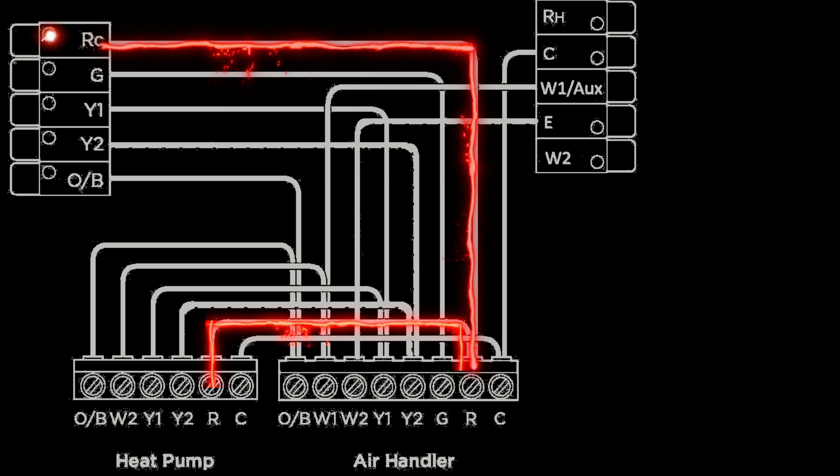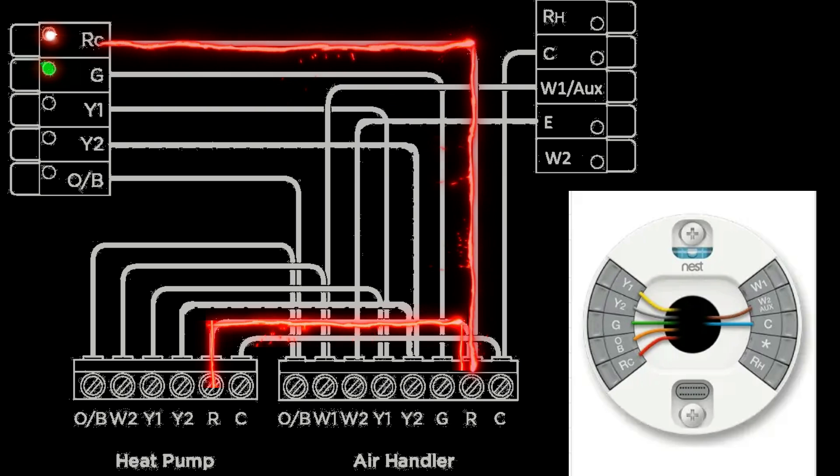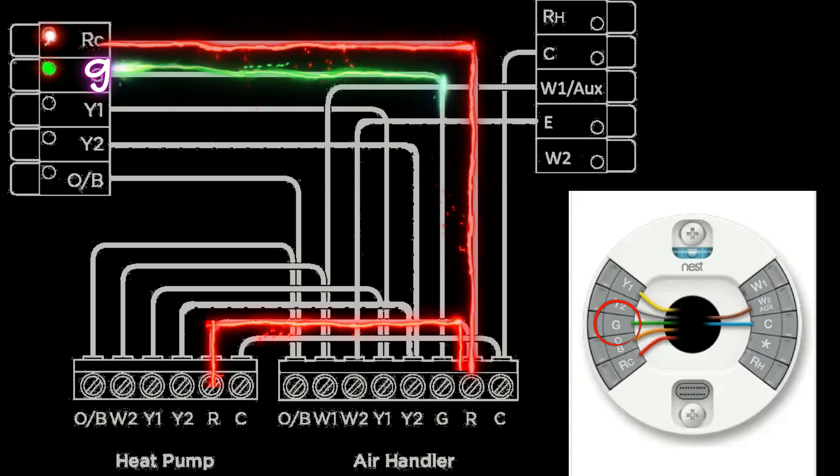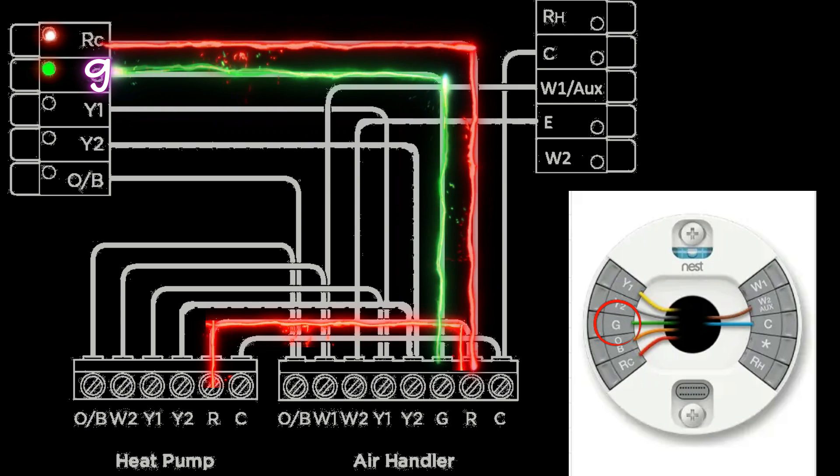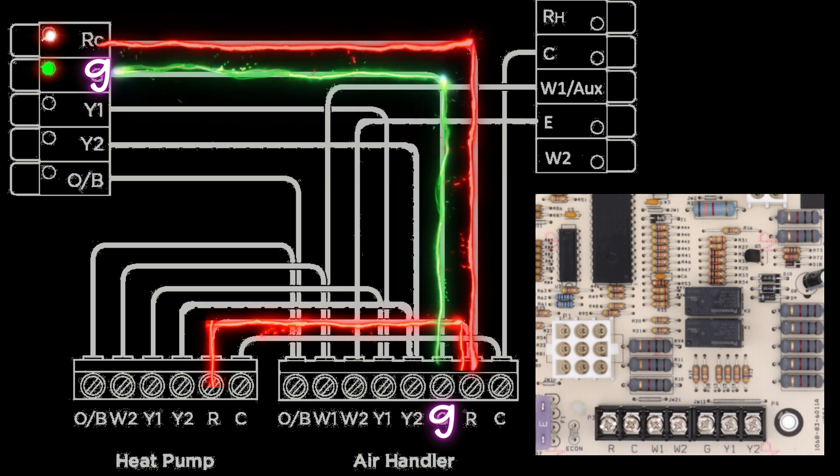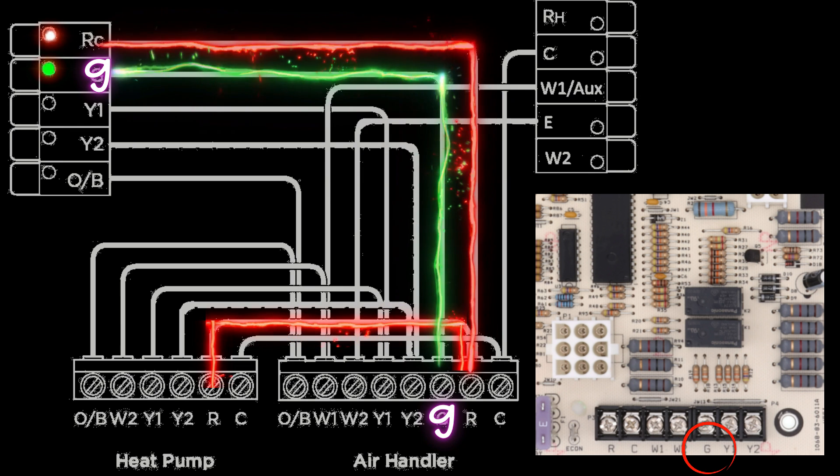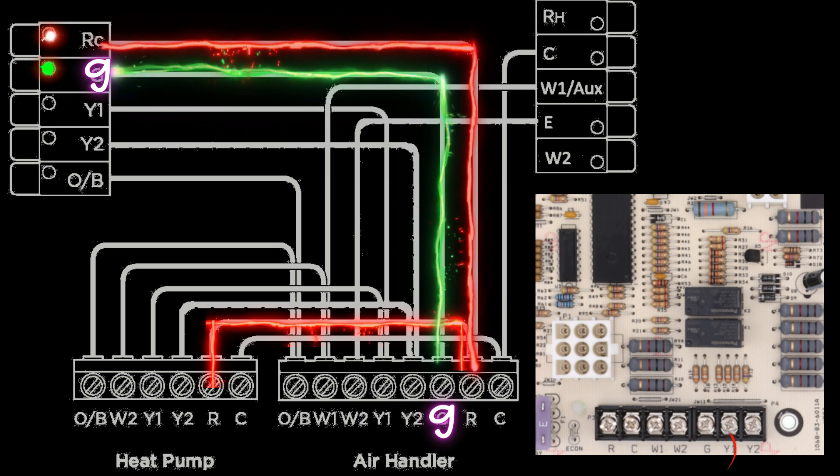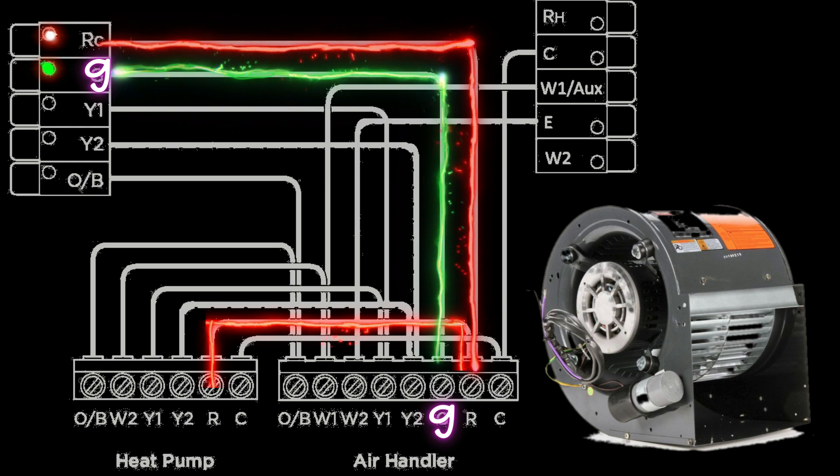Now the first thing the thermostat is going to do is take power from that RC terminal and power the G terminal. And you're going to have a green wire from the G terminal on your thermostat going up to the G terminal on the control board in the air handler. Now the whole purpose of this wire is to activate the blower motor.